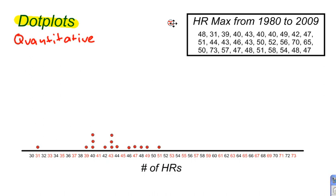Then 50, 52, and 56. 70 and 65 — 70 is all the way down here. 65, right here.